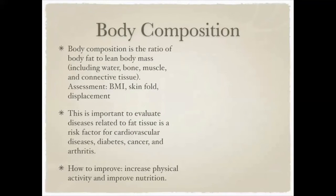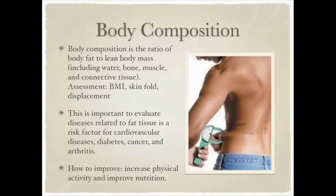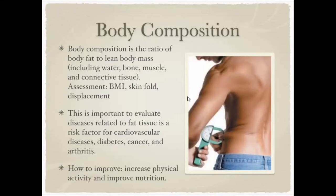Body composition is the ratio of body fat to lean body mass. Your body is comprised of things like water, bone, muscles, tissue, tendons, and ligaments. What we use is BMI because it's really easy, but there's also the skinfold test, water displacement, and DEXA scans shown in the picture. This is important to evaluate disease risk factors — higher chances for cardiovascular disease, diabetes, cancer, arthritis, and obesity. How to improve it? Physical activity and nutrition.